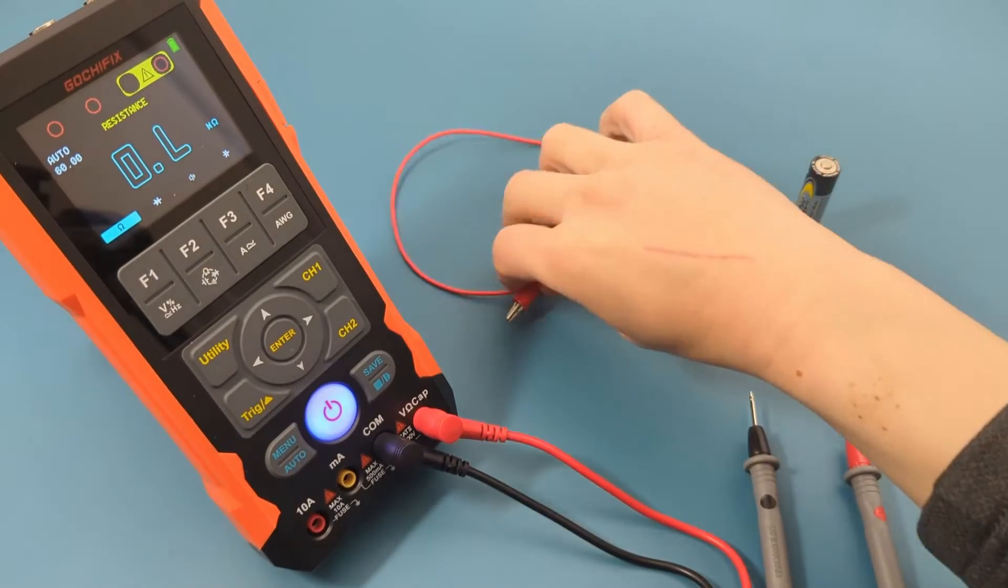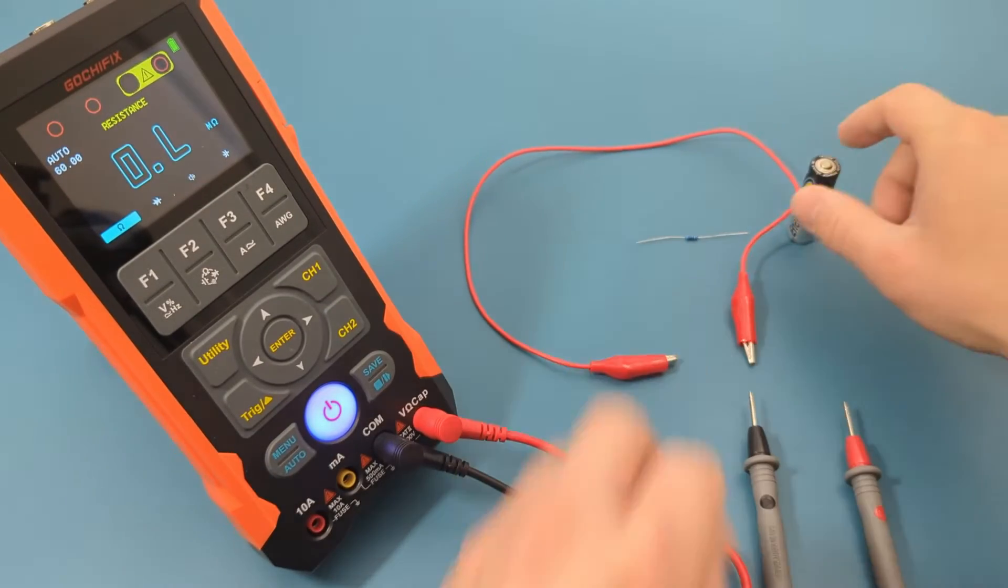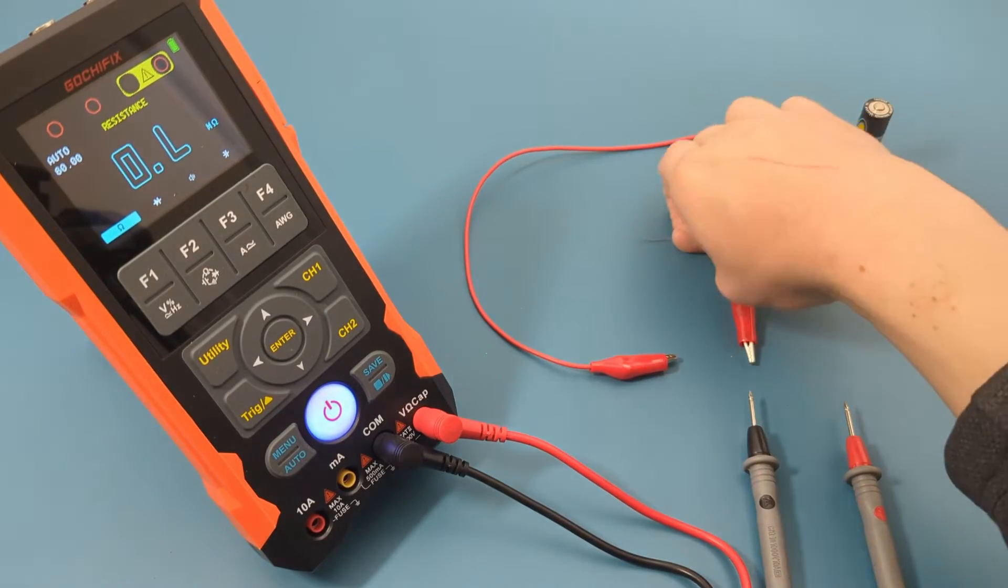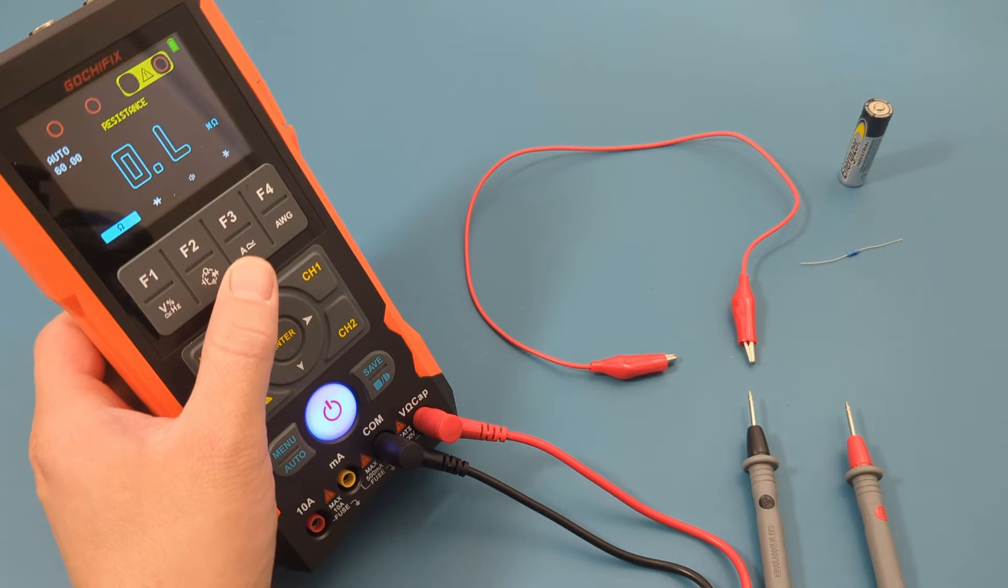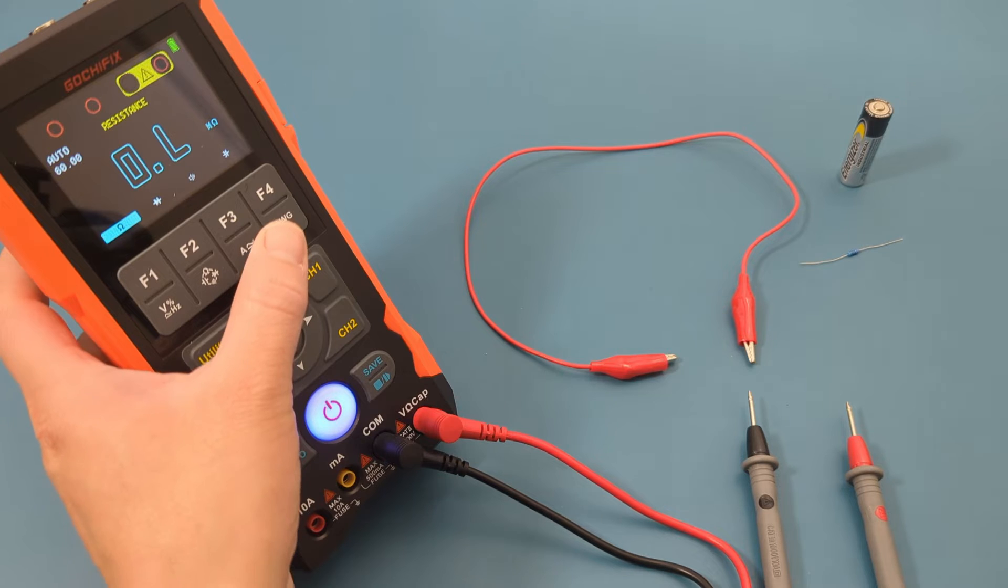The next test is to verify continuity. I have an alligator clip for this test. If the alligator clip is good, we should have continuity. Press the F3 button to toggle to the continuity setting.